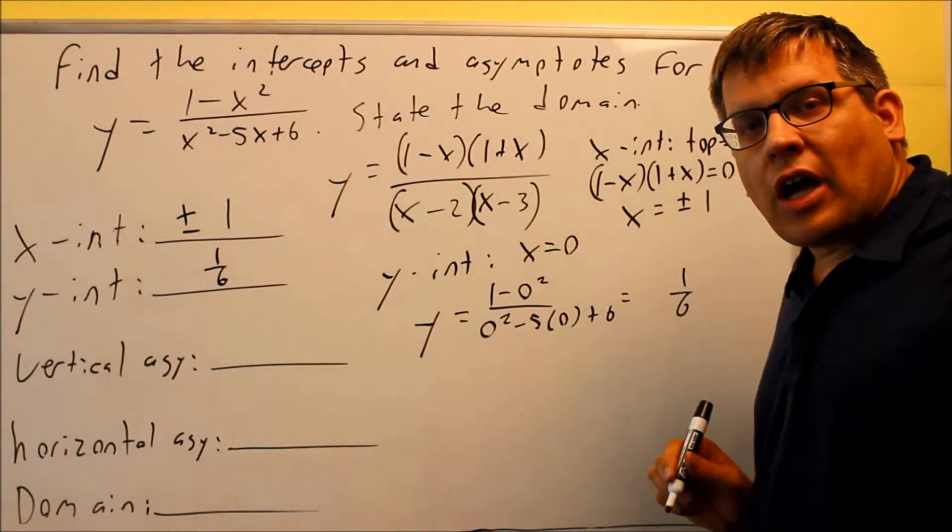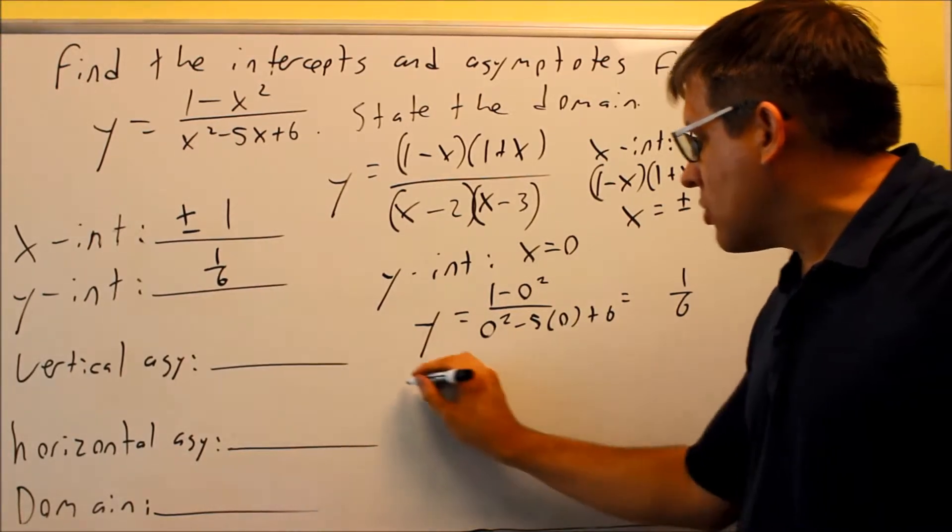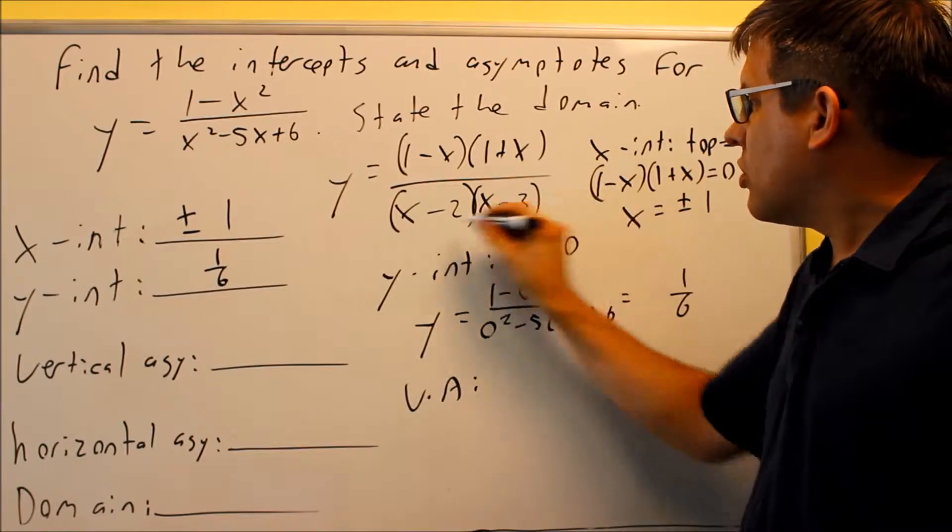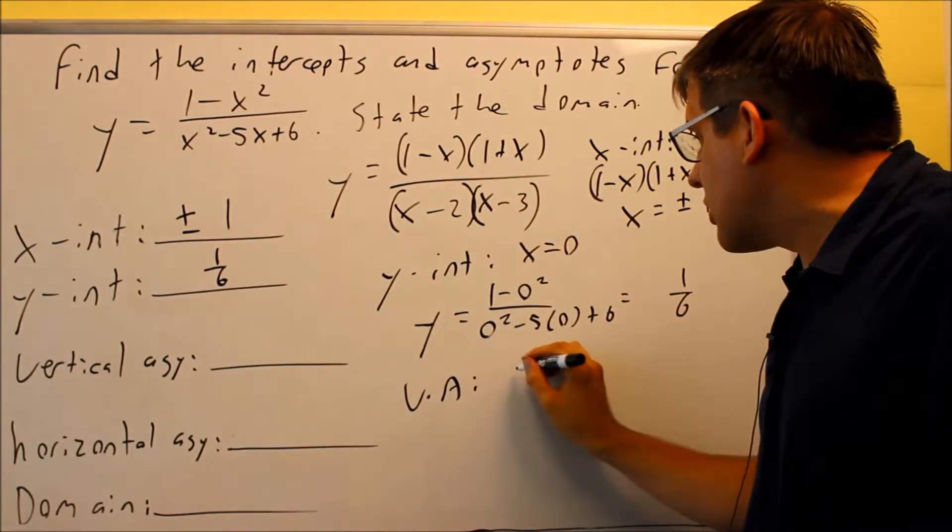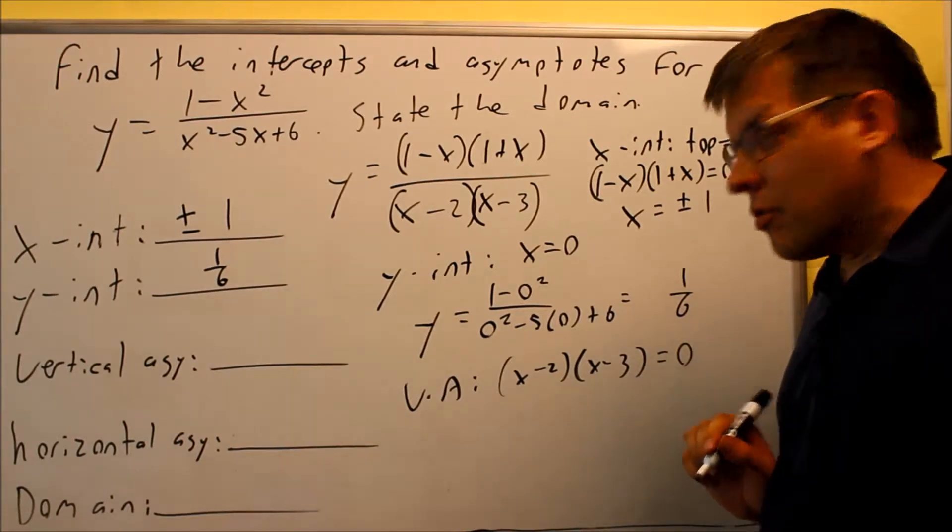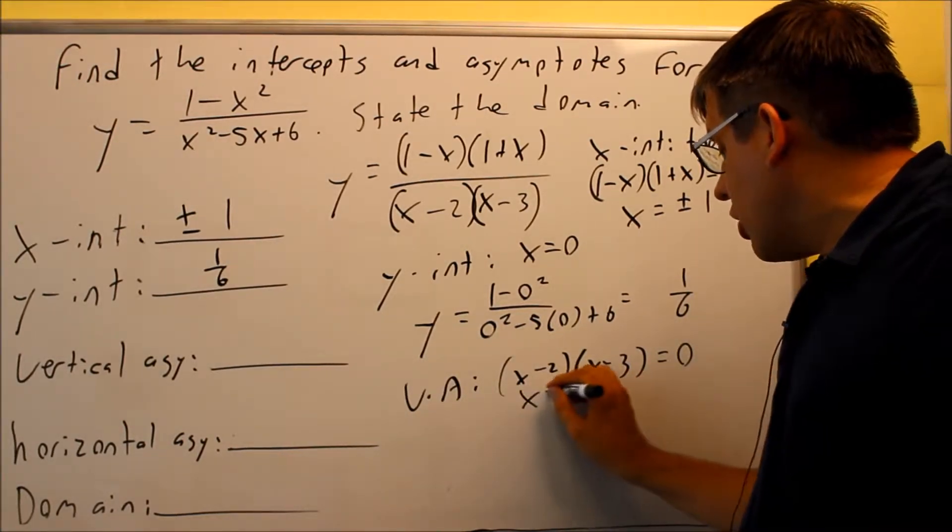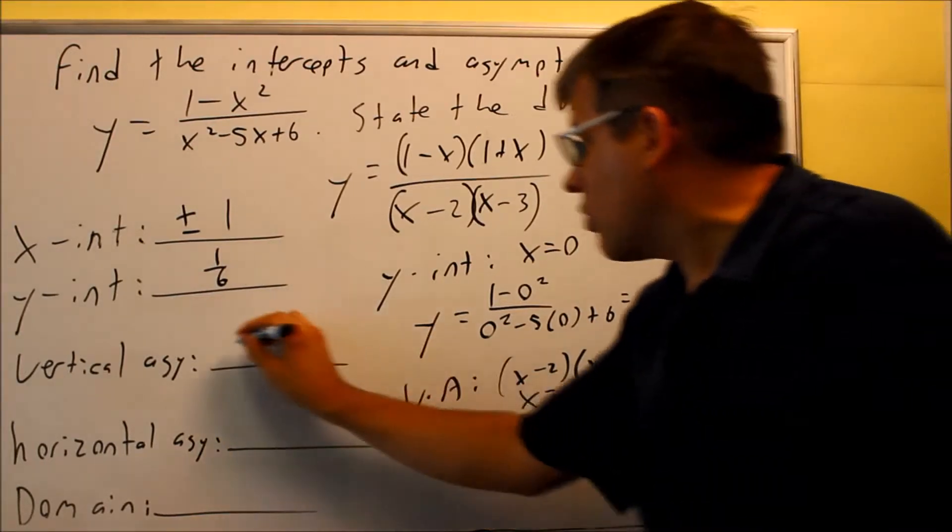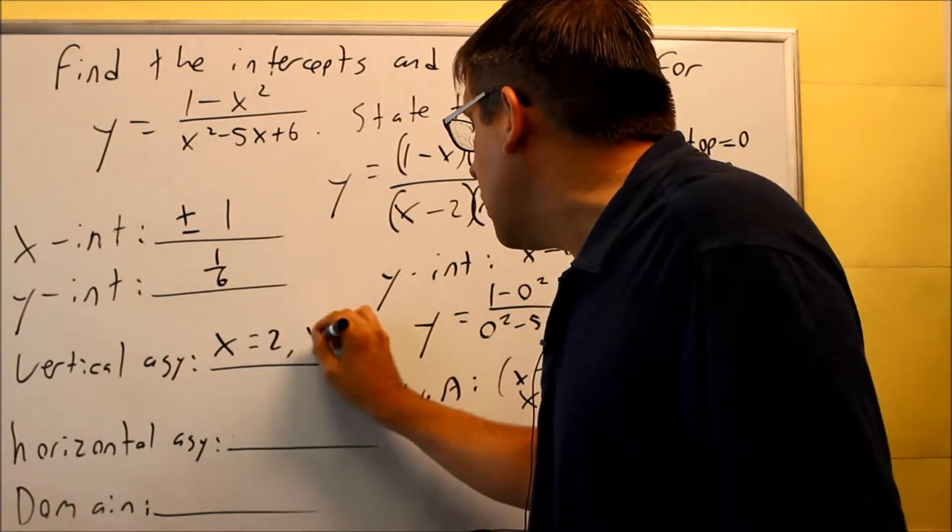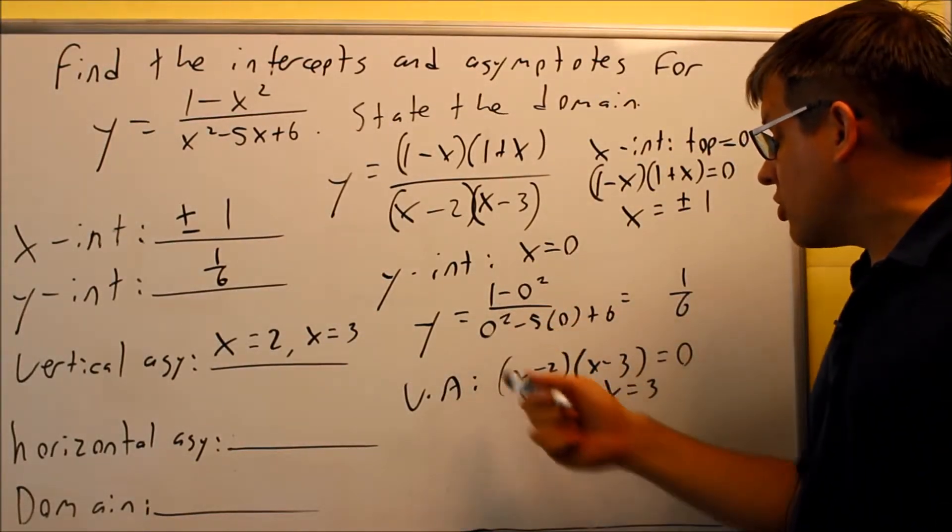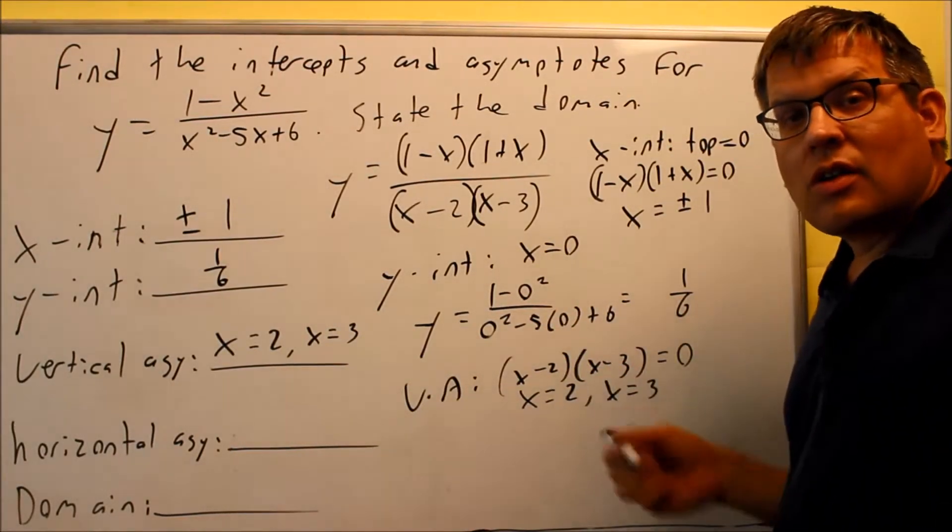Now we want the vertical asymptote. Vertical asymptote, the VA, that's where you're going to set the bottom one equal to 0. And here's the bottom one right there. It's x minus 2, x minus 3. That's going to equal 0. So when you set it equal, you get x is equal to 2, and also you get x is equal to 3. So we're going to write both those out. x equals 2, x equals 3. Those are your two vertical asymptotes. Vertical asymptote is always the bottom one set equal to 0.